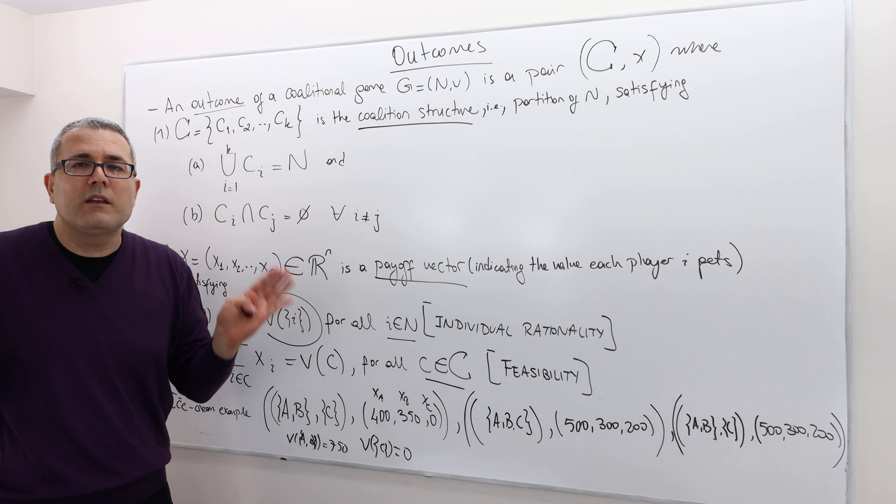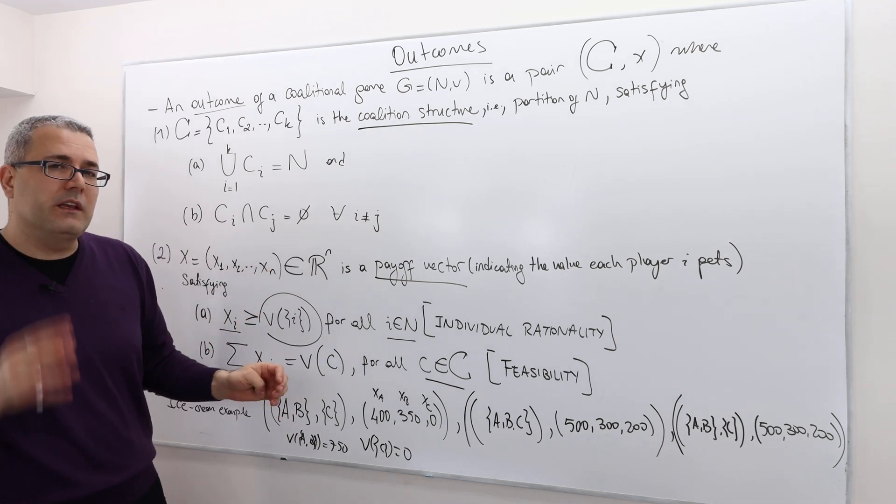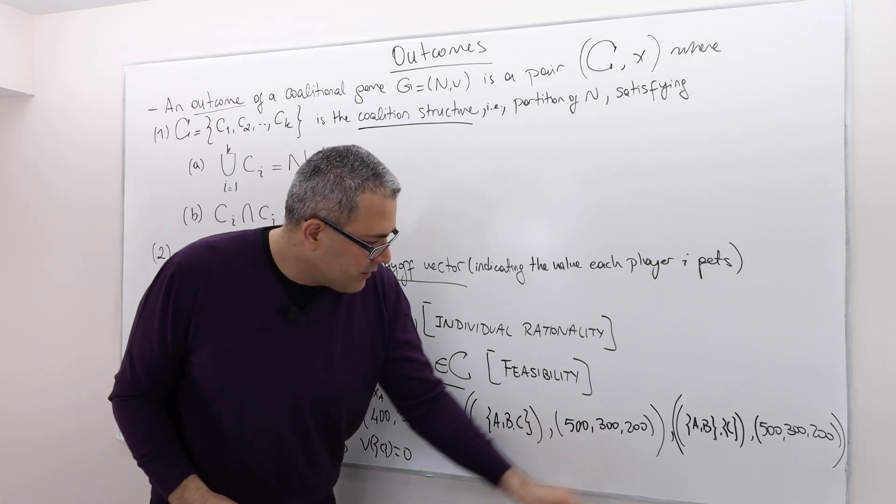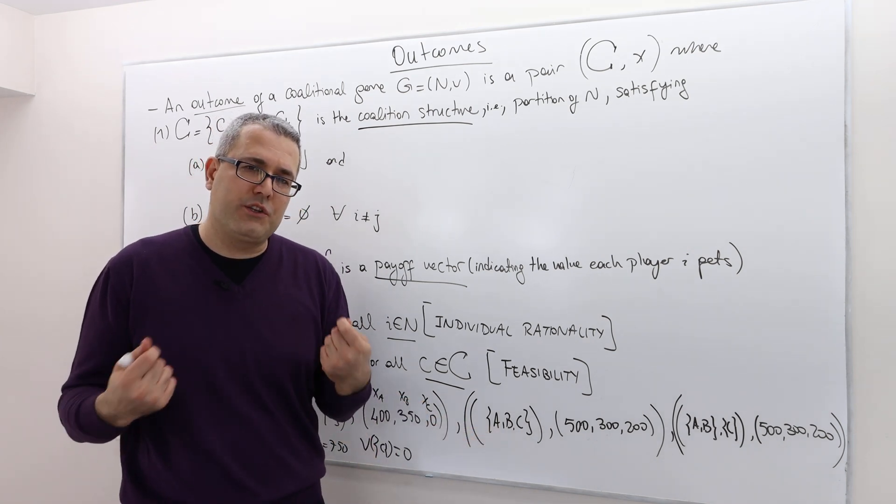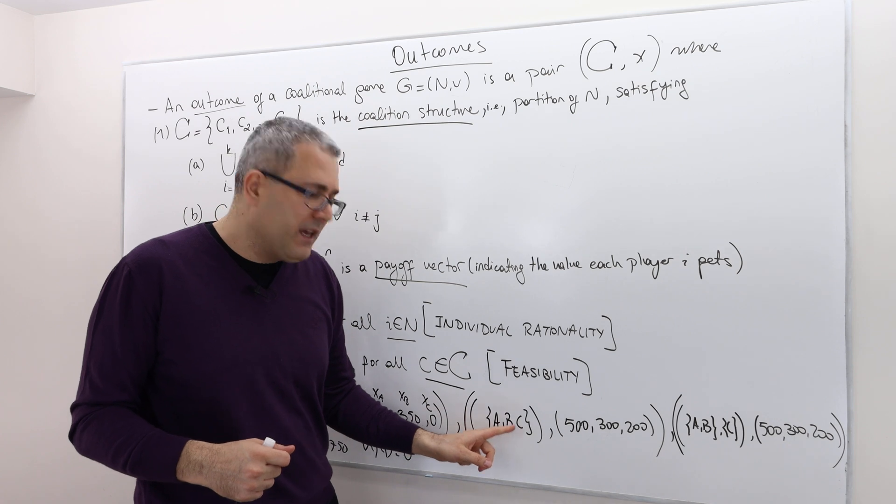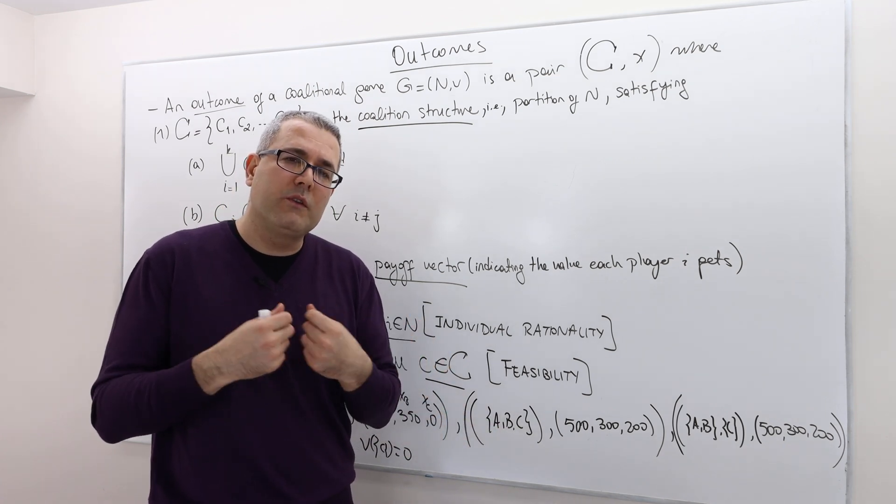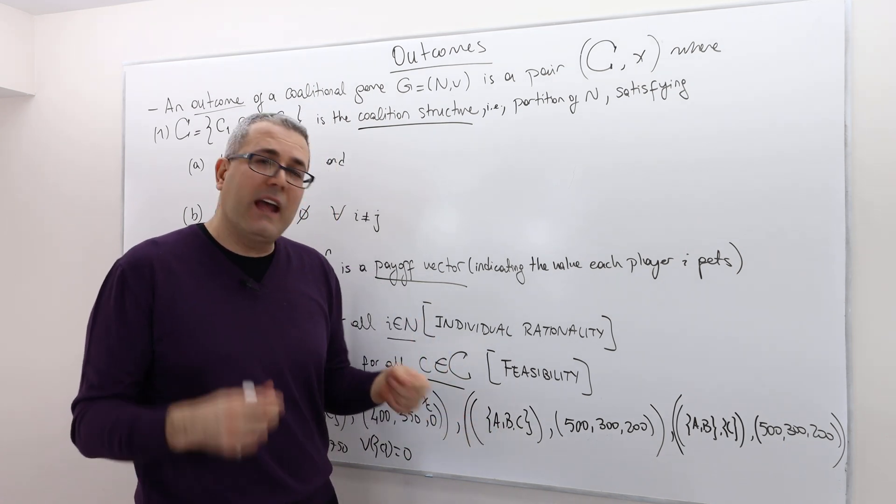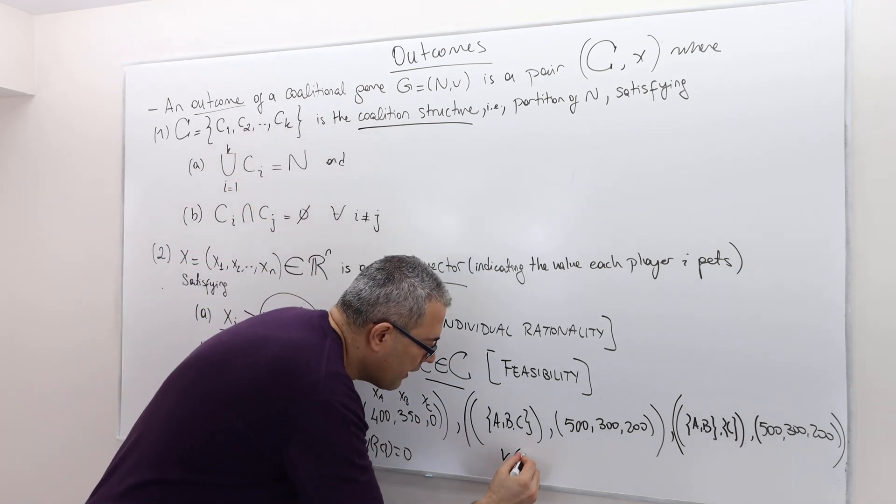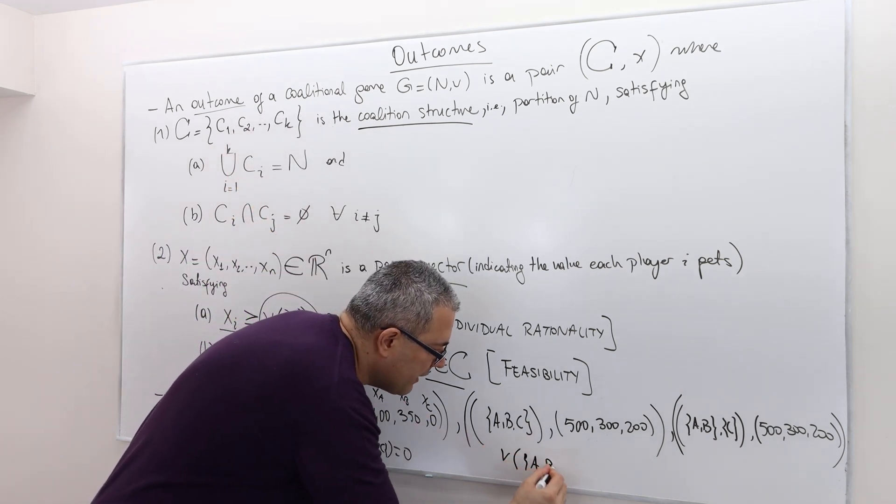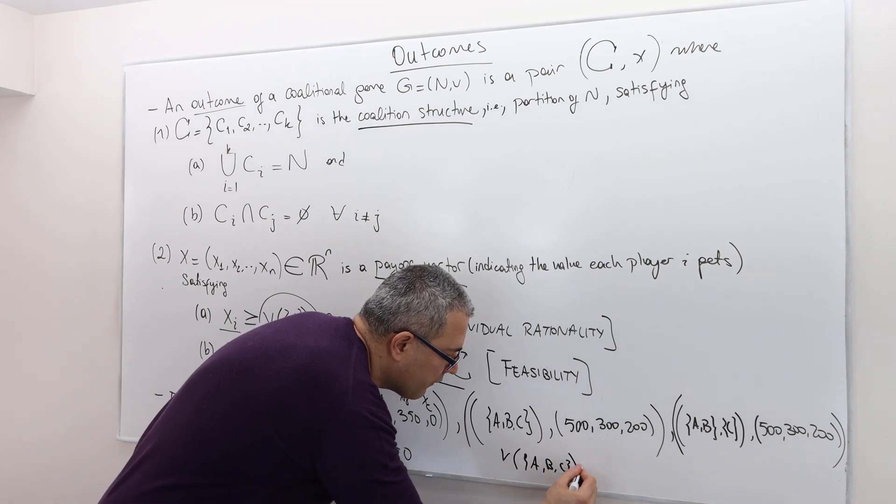But this is one possible outcome of the ice cream game. What about this one? Well, this is another outcome of the ice cream game. This time, the grand coalition is formed, meaning A, B, and C, they all pooled their resources. And so they bought, remember, V of A, B, C, meaning when they get together, all of them, they can buy the largest ice cream. So it's 1,000.